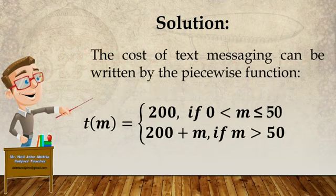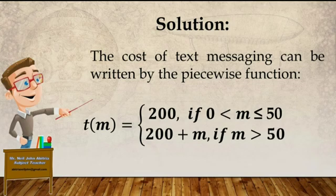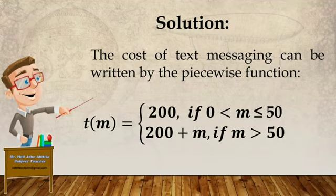To put it into the piecewise function: we already know that the cost of the text messages is our dependent variable. Based on the illustration, you will be charged 200 pesos if the number of text messages is less than or equal to 50 — that is the first condition. The second condition is you will be charged 200 pesos plus the cost of the excess per text message if the number of text messages is greater than 50.